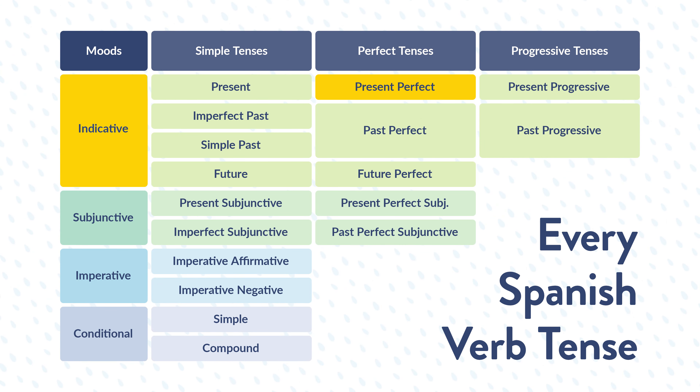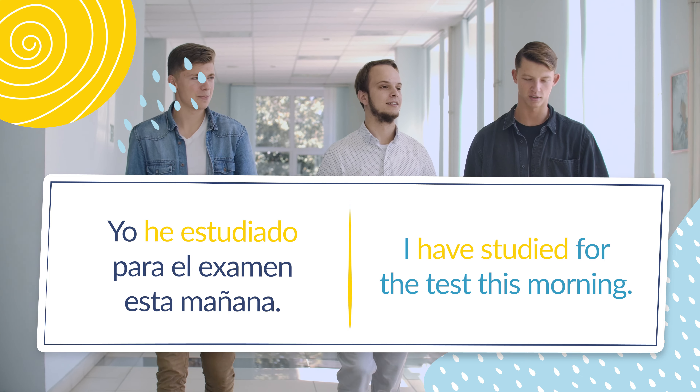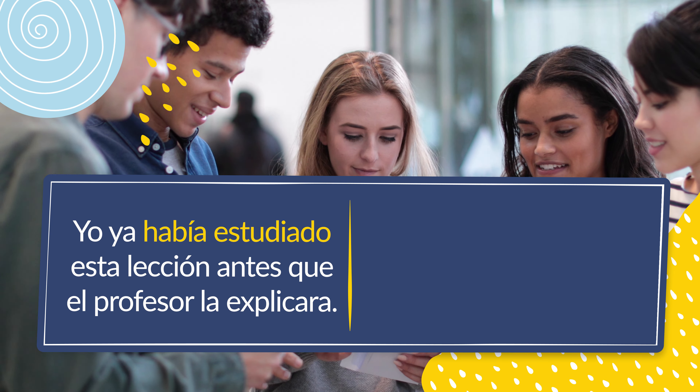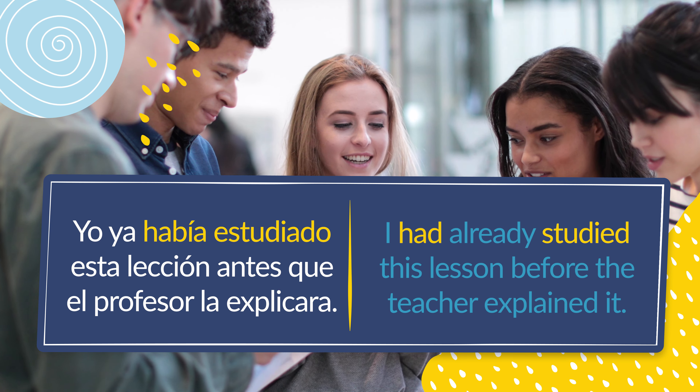We use the present perfect tense when something started and ended in the past, but it happened very close to the moment we are talking about. An example of the present perfect tense would be, yo he estudiado para el examen esta mañana — I have studied for the test this morning. The indicative past perfect tense, on the other hand, is used to talk about an action that was completed before another action, or to talk about actions that are implicit and happened in the past. For example, yo ya había estudiado esta lección antes que el profesor le explicara — I had already studied this lesson before the teacher explained it.